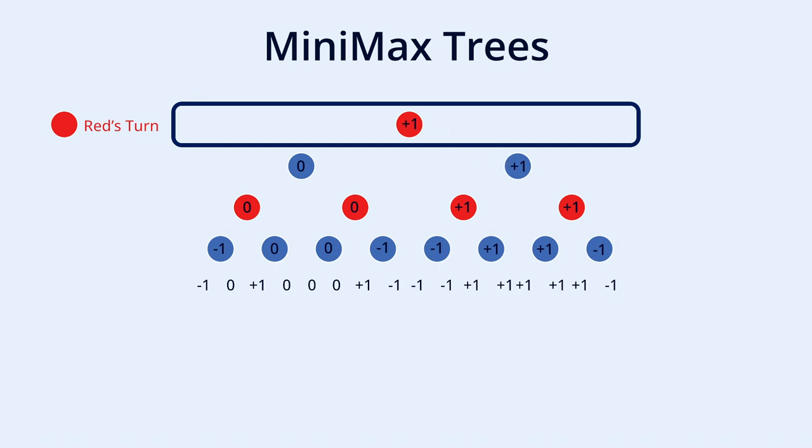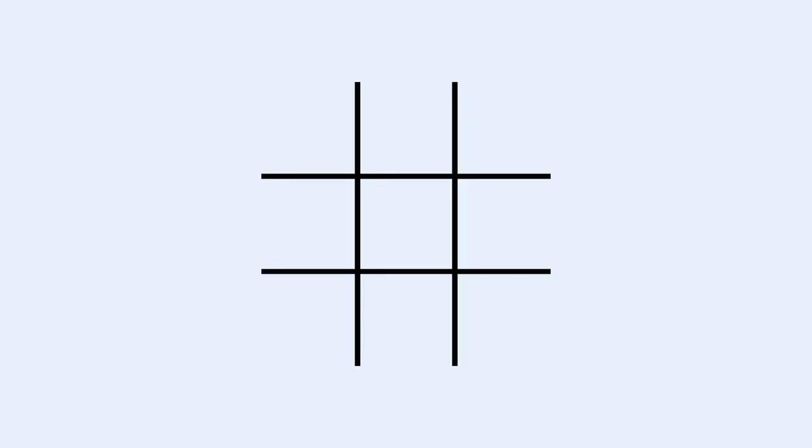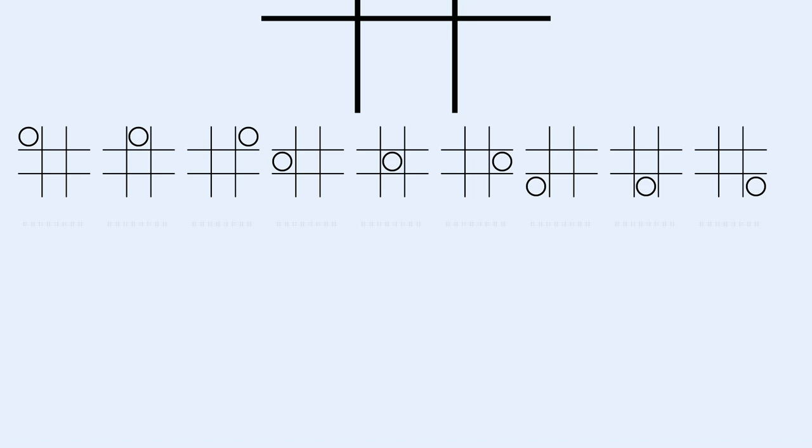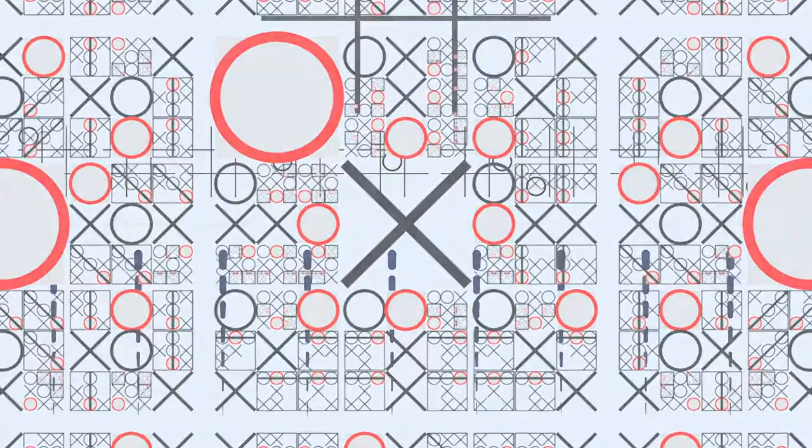With enough depth, we can predict all possible states of the entire board until the very end of the game and make the best choice based on those predictions. For tic-tac-toe, this is all fine. We start with 9 choices, then there are 8 choices for each of those 9 options. Then 7, then 6 and so on. While this still results in a lot of nodes, it's still something our computers can handle.